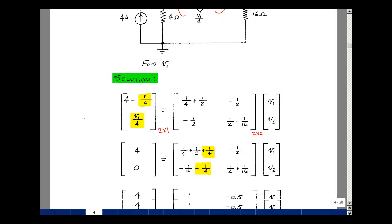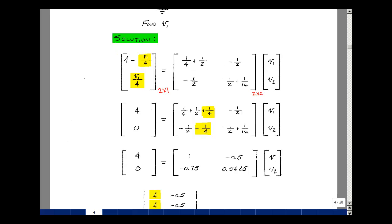Okay, now we can simplify this by combining those fractions. So a quarter plus a half plus a quarter is 1, minus 0.5. A quarter and a half is 3 quarters, so minus 0.75. And then a half plus 16th, I can't do it in my head, but on my calculator, I got a positive 0.5625.